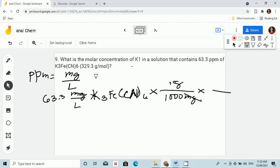And then, let's now use the atomic mass of potassium ferricyanide. So we have 329.3 grams per mole. We can cancel grams.